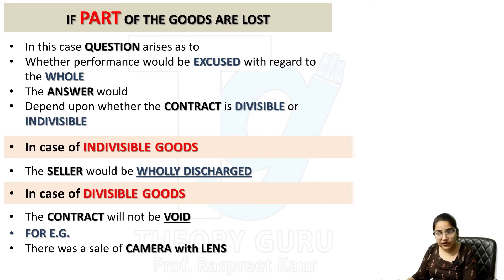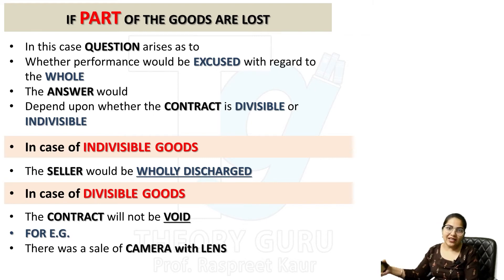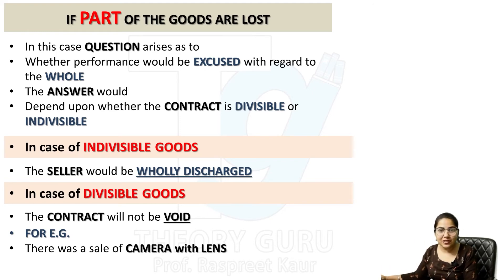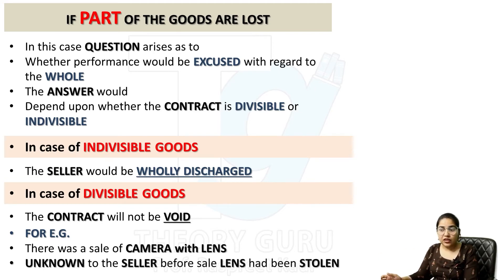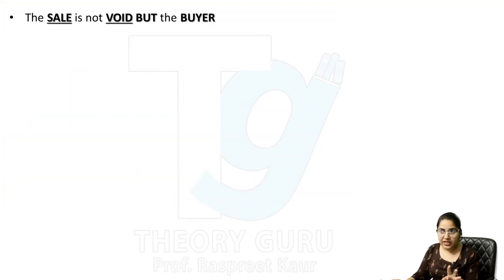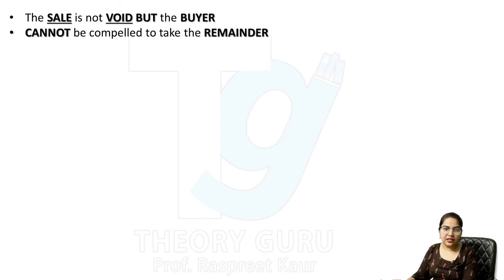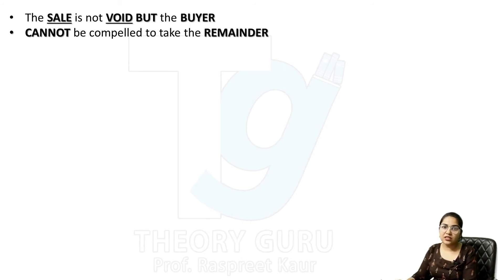For example: there was a sale of a DSLR camera with lens. Professional cameras में lens की अलग packing होती है और camera body की अलग। Unknown to the seller, before sale, the lens had been stolen. The sale is not void, but the buyer cannot be compelled to take the remainder. Buyer चाहे तो camera body purchase कर सकता है lens के बिना, या पूरी deal वहीं खतम कर सकता है। But this sale is not void।